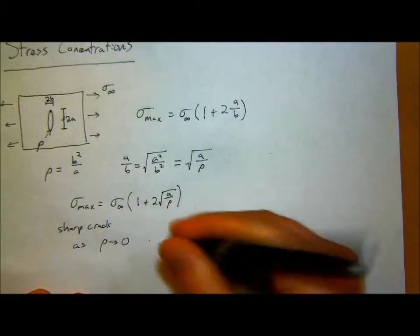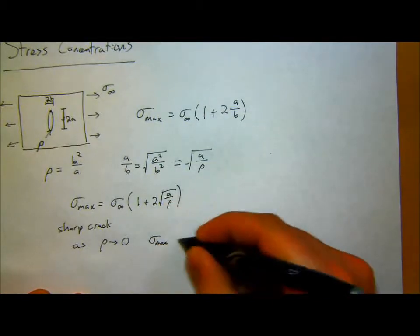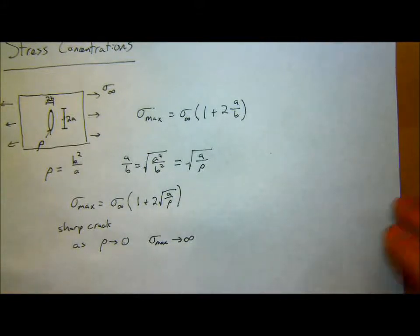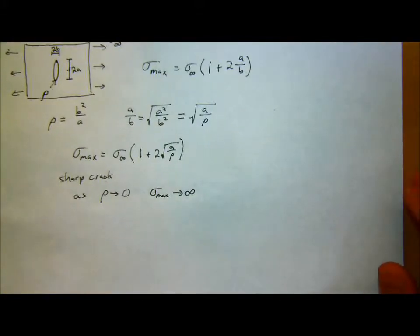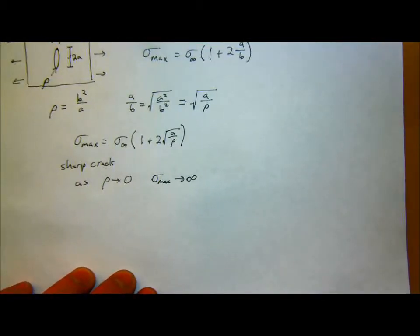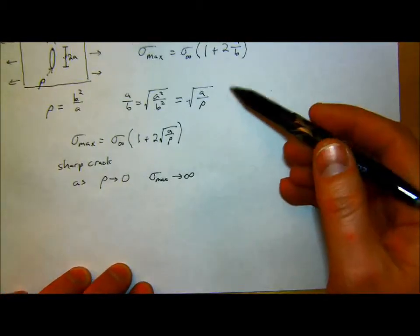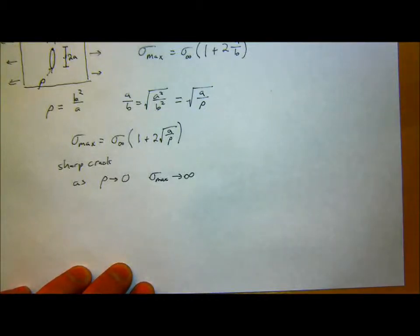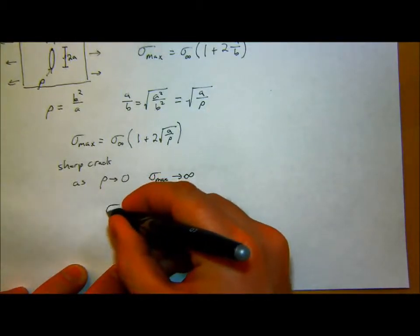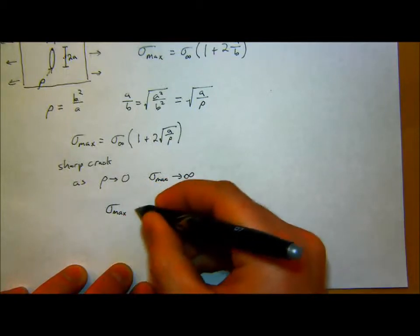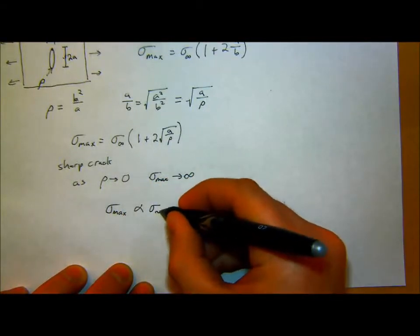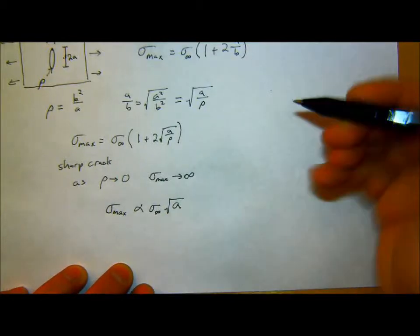So I can take that rho, plug it in, now say this A over B is also equal to the square root of A squared over B squared, which is also equal to the square root of A over rho. So now I'm going to rewrite my sigma max in terms of rho. Sigma max is equal to sigma infinity, one plus two square root of A over rho.